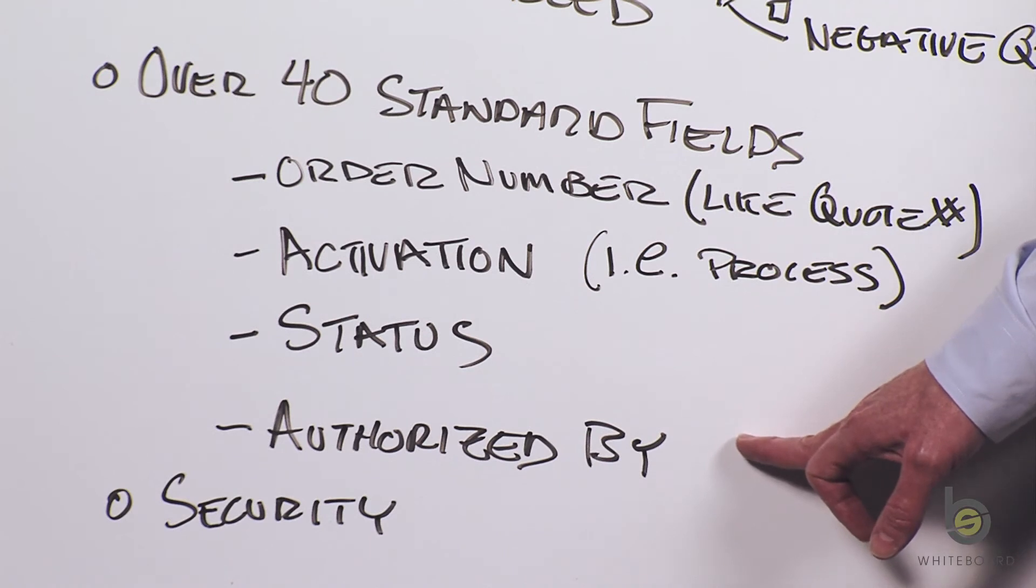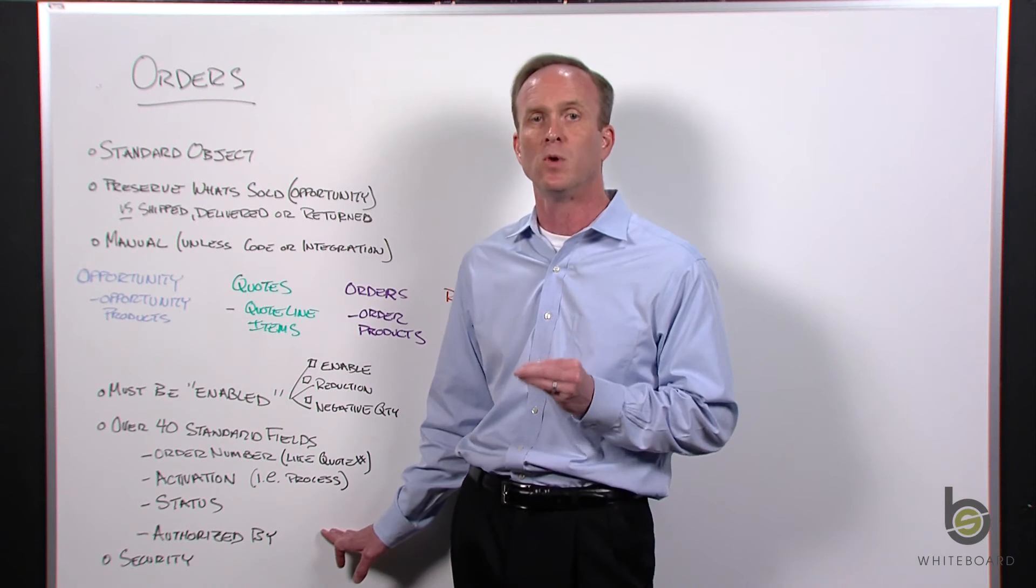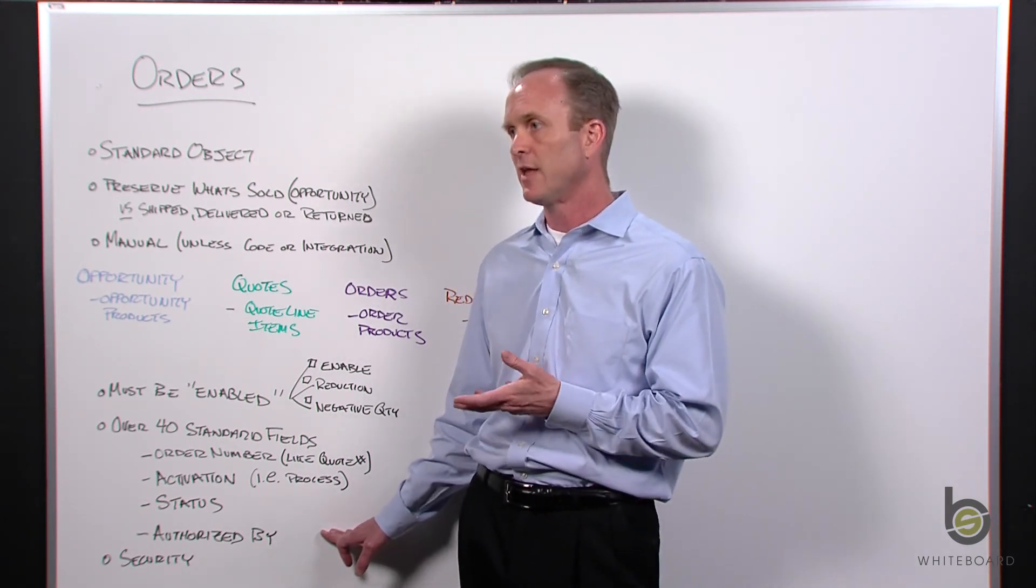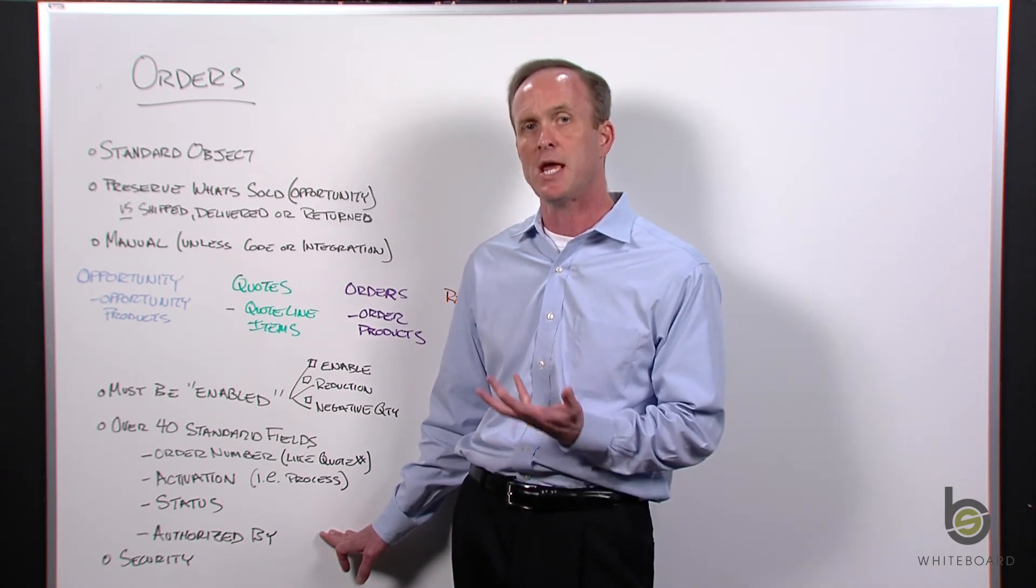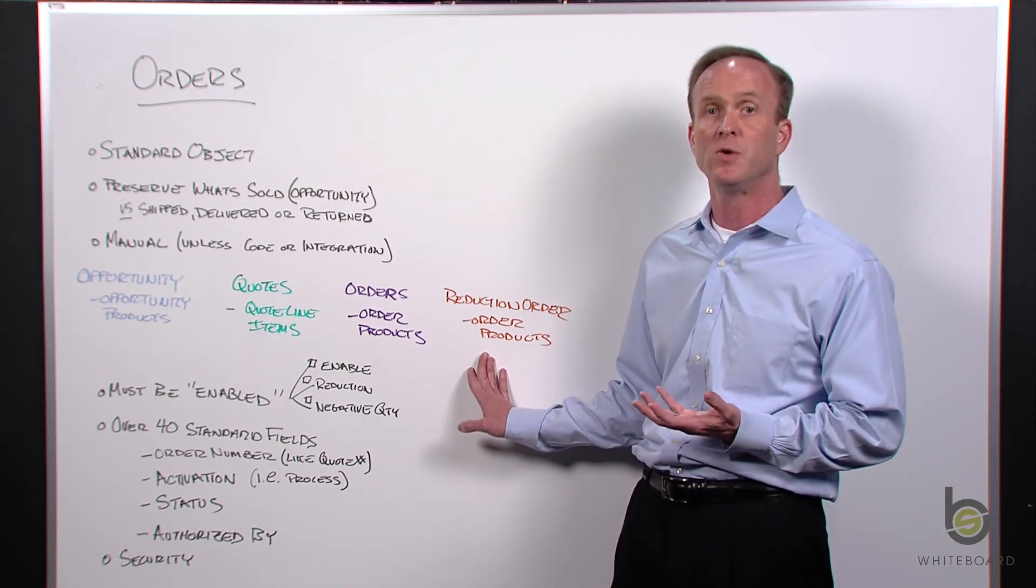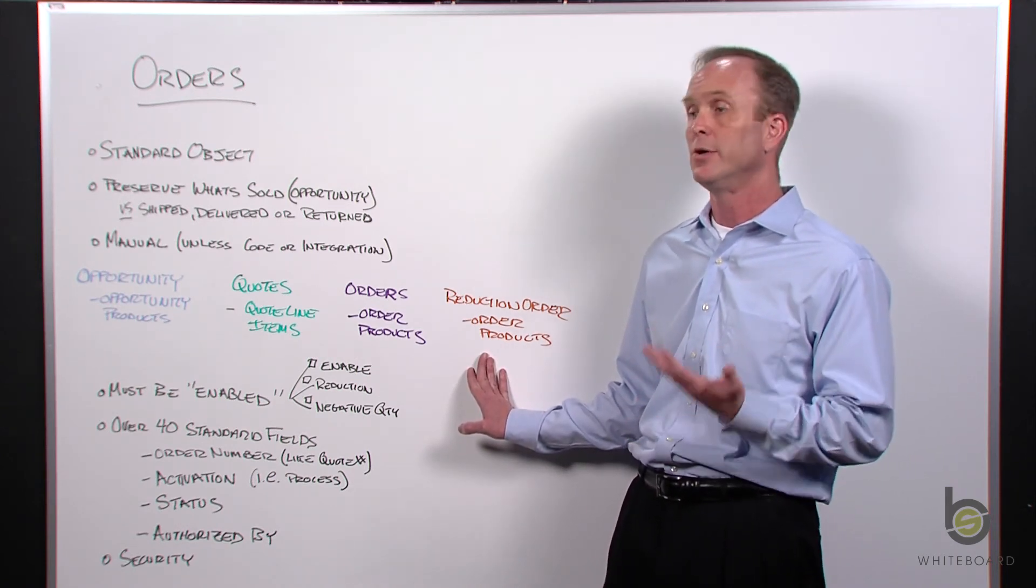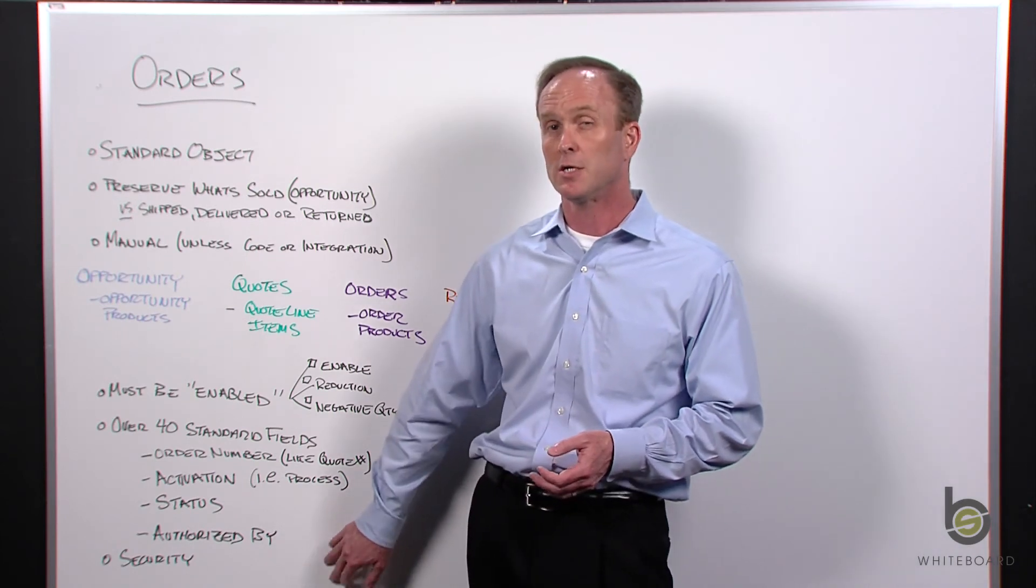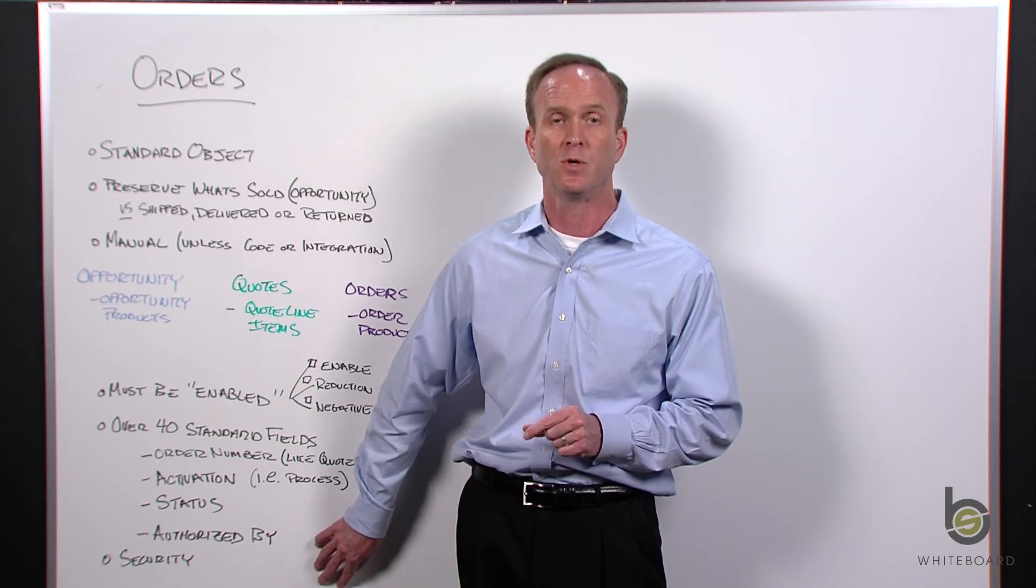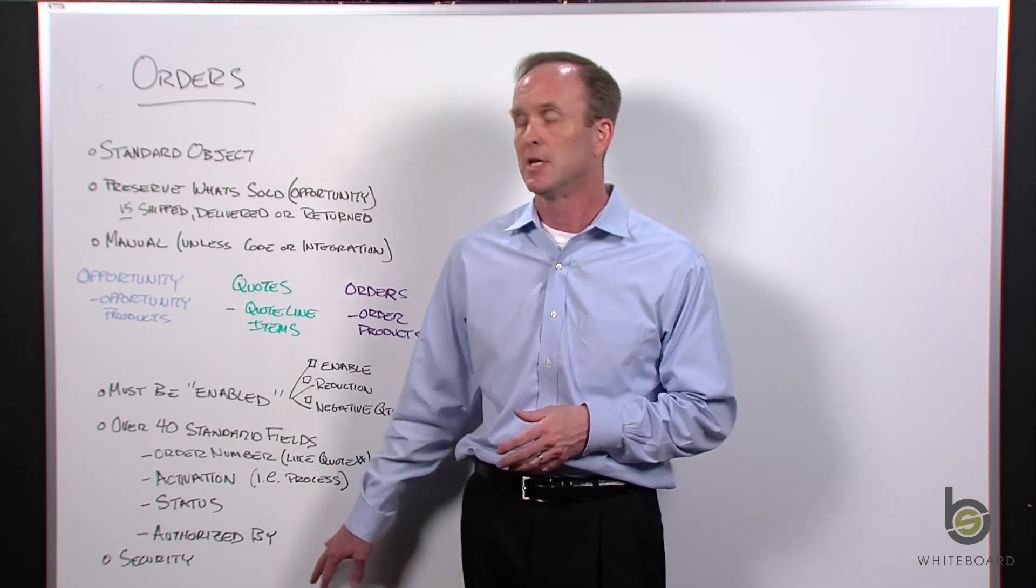There's also some security that you can put in place, which is around who authorized that order. That kind of leads into the last topic: setting up security around orders. You may not want salespeople to process returns. Think about who in your organization is going to manage orders and manage reduction orders, which are returns. You may need to put some security around who can see it, who can activate it, who can delete an order record. As a best practice, think about setting up security - who can see and do what with orders and reduction orders.